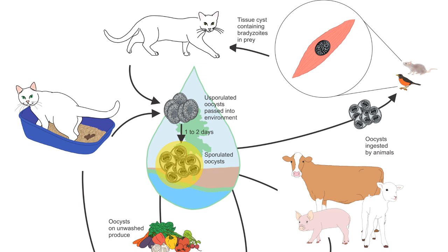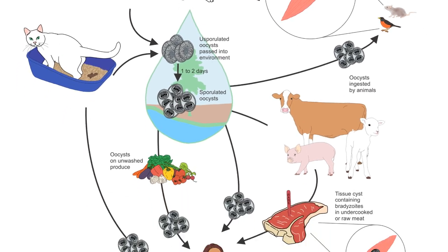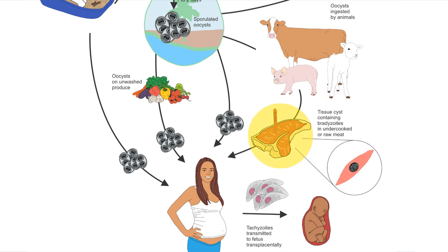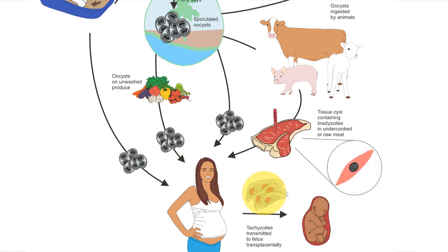Oocysts sporulate outside the cat within one to five days, and remain viable in the environment for several months. What happens in other animals and people? After consumption of tissue cysts in uncooked meat by a carnivore, or consumption with food or drink by other warm-blooded mammals, released bradyzoites and sporozoites infect and replicate in the intestinal epithelium. After several rounds of replication, tachyzoites emerge and can be spread via blood and lymph. What makes tachyzoites so destructive is that they replicate intracellularly, leading to cell rupture and tissue necrosis. If an animal is young or immunosuppressed, this damage may lead to death.